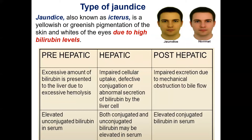Jaundice is caused by the build-up of bilirubin in the blood. Three kinds of jaundice exist. In prehepatic or hemolytic jaundice, there is excessive red blood cell breakdown, causing unconjugated hyperbilirubinemia. In hepatocellular jaundice, there is dysfunction of hepatic cells — the liver loses the ability to conjugate bilirubin, leading to both conjugated and unconjugated bilirubin in the blood. Post-hepatic or obstructive jaundice is characterized by increasing concentration mainly of conjugated bilirubin in serum.